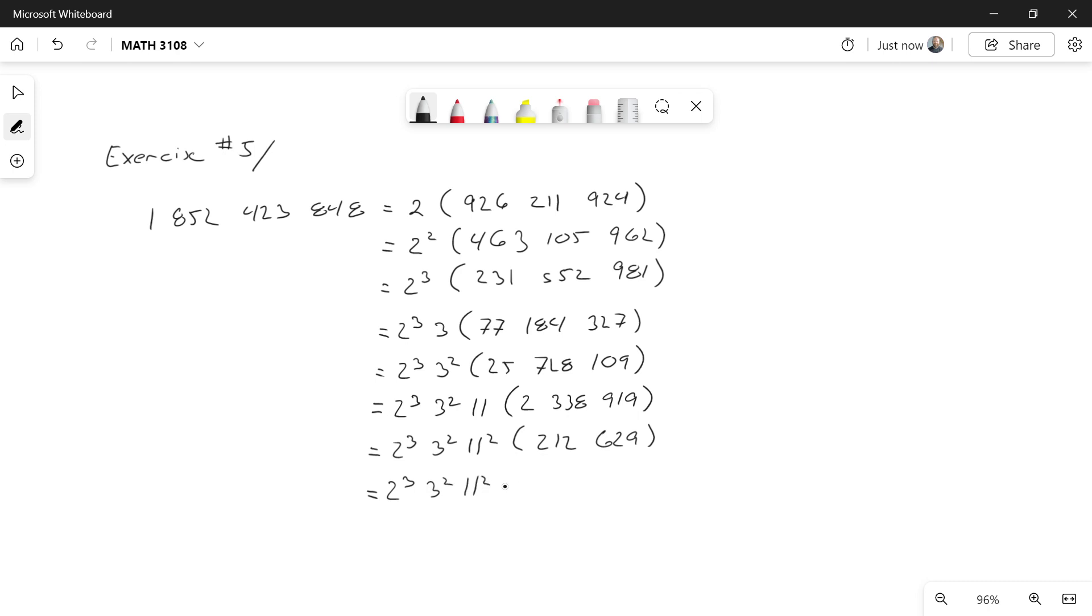11 to the 2, 19 to the 3. And what do I have left? 31. 31 is a prime. So I've taken a number and I've decomposed it into a product of primes.